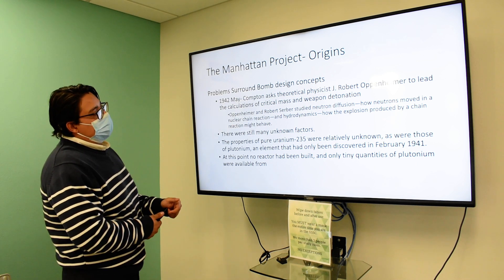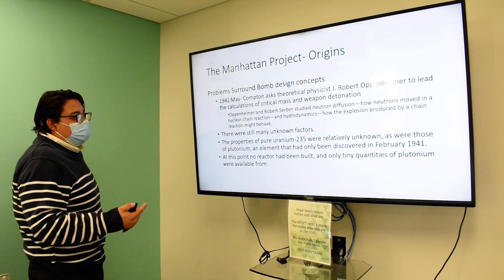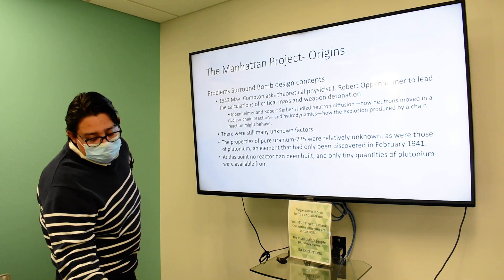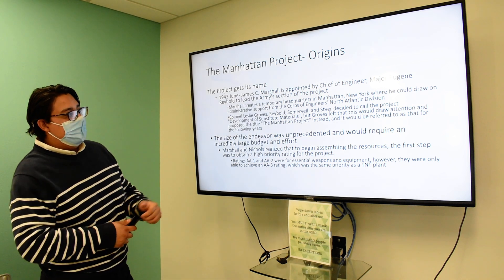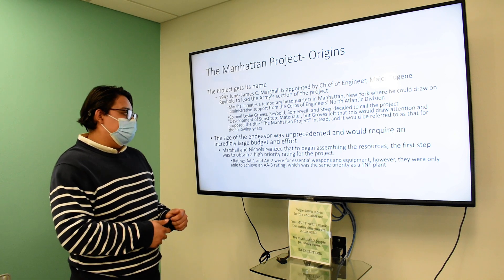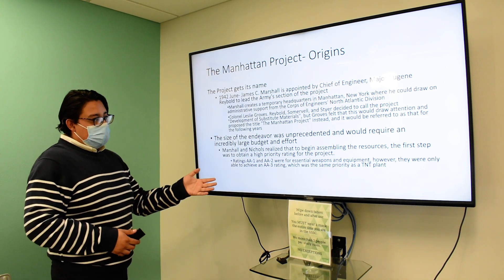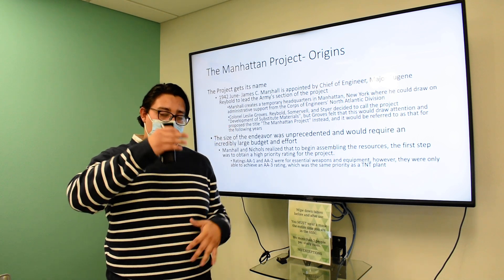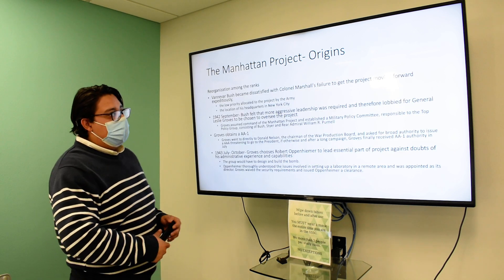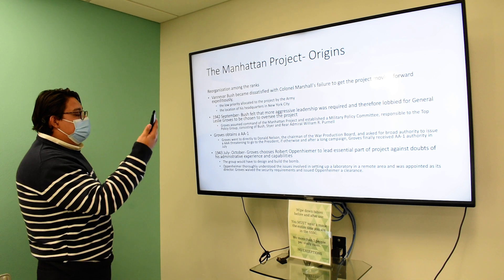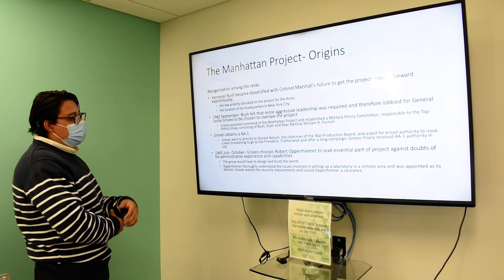There were many problems around the bomb design concept during these very formative years — many unknown factors, U-235 was relatively unknown, and no reactor had been built. The project finally gets its name in 1942: the Manhattan Project. The size of the endeavor was unprecedented and required an incredibly large budget. They needed a top priority rating from the American government, and the person who got that done was General Leslie Groves, who secured that rating for them.